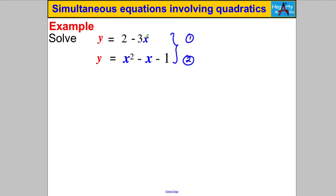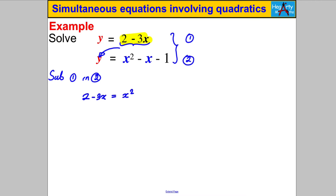Because equation 1 is of the form y equals 2 subtract 3x, we can substitute 2 subtract 3x for y in equation 2. We write: substitute equation 1 into equation 2. So 2 subtract 3x equals x squared subtract x subtract 1. I like writing my x squared on the left-hand side, so this is the same as x squared subtract x subtract 1 equals 2 subtract 3x.